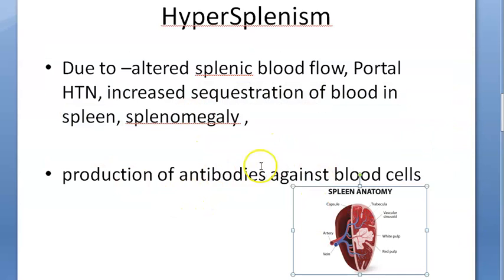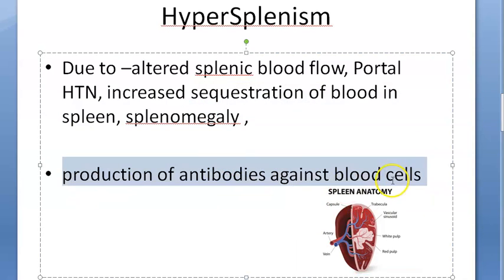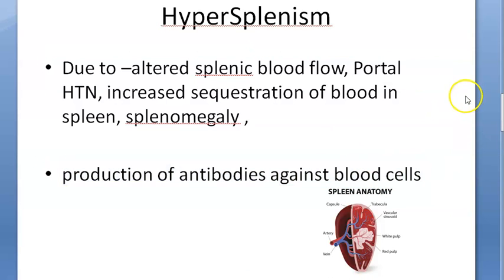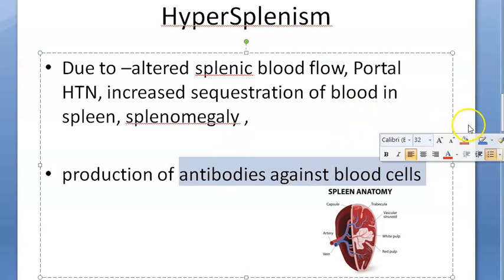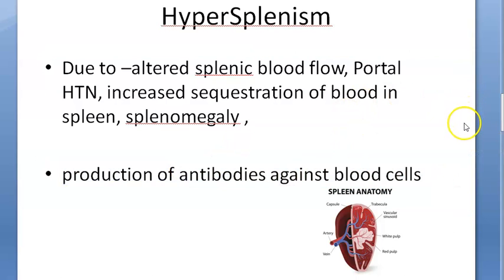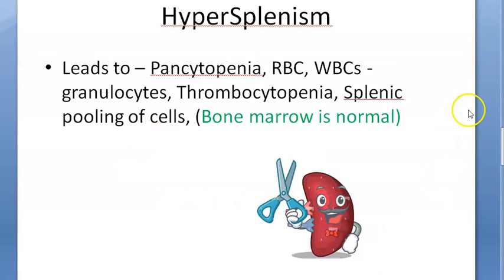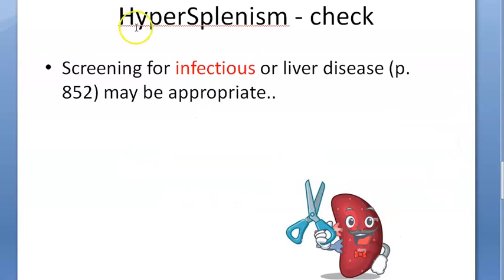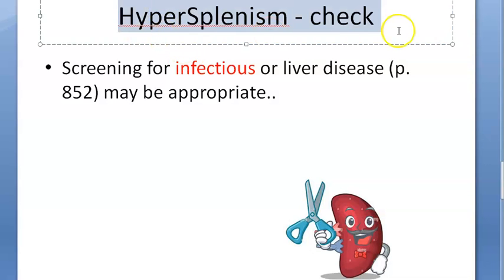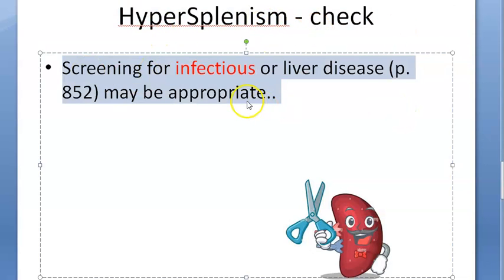Another possibility is that blood cells are being attacked by antibodies, making them very weak, and hence the spleen removes them prematurely. You will need to rule out infection in these people, as infection could be driving the antibody response causing this.